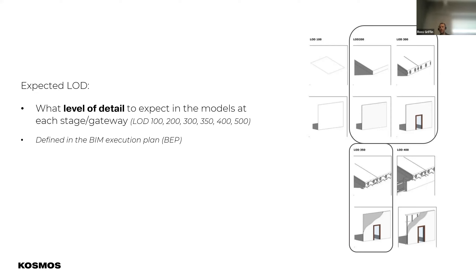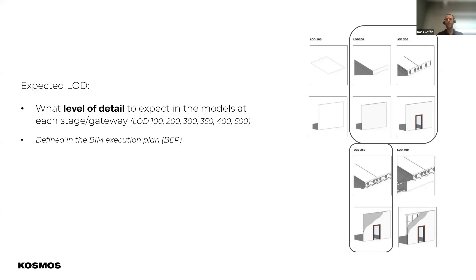By the time you get to stage four on traditional client-led design and traditional procurement, almost all disciplines should be at that level, including civils, external works, and landscaping. What you'll probably see in the next couple of years is that external works, drainage, underground, and landscaping will lag a little behind. Often our architecture, construction, and MEP within the building itself is quite good, but for civils and landscaping we're still doing 2D — we haven't got to that modelling stage yet.